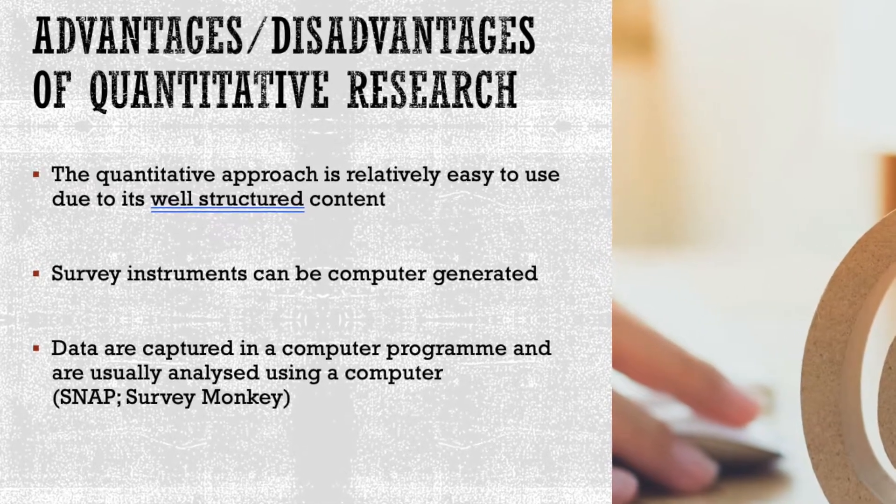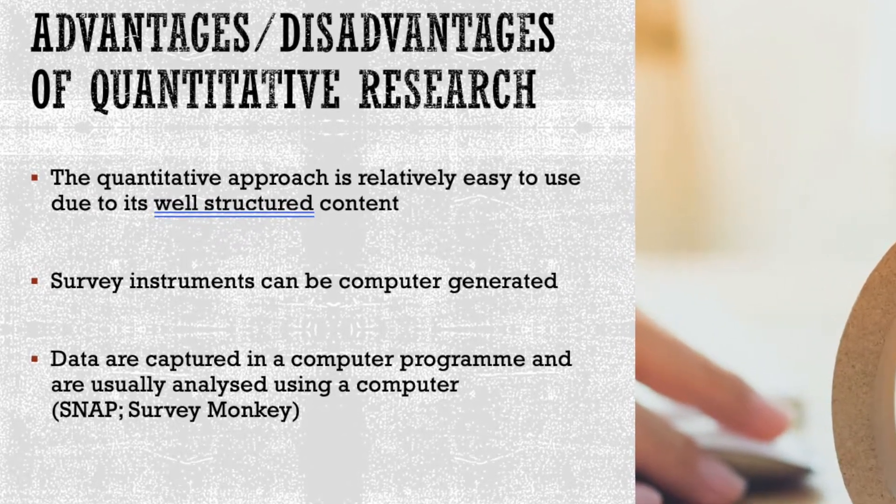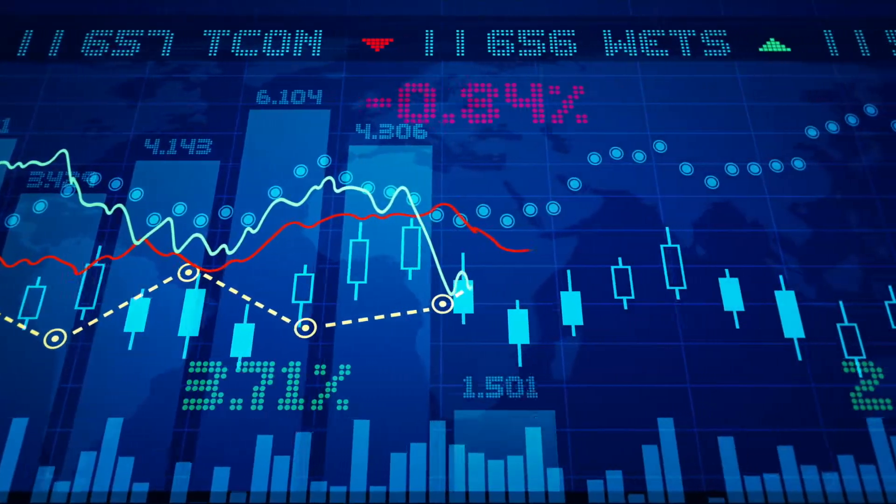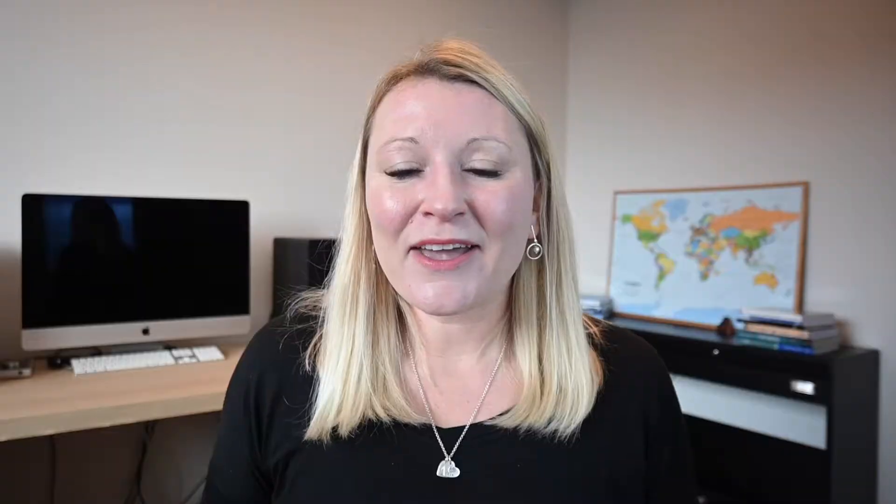There are lots of advantages of using quantitative research. It's often quite easy to use — designing a questionnaire isn't that difficult, and I have a video on that which I'll link at the end. Quantitative research is generally well structured, and we can use computers. They can help us generate surveys — things like SurveyMonkey or Google Forms — rather than having to physically design something ourselves. We can also use computer software to generate analysis and statistical tests.